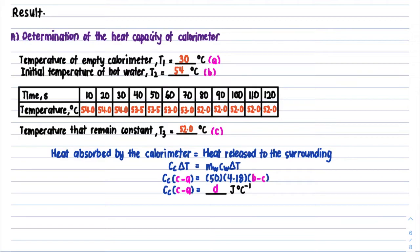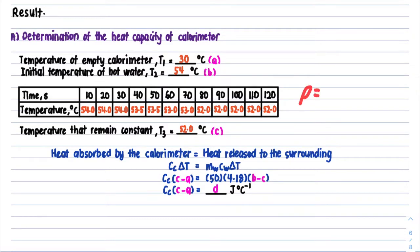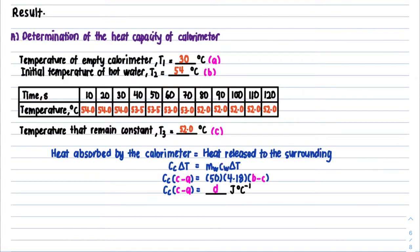Heat released to the surrounding is from the water: Q = mCwΔT. The mass of water is 50 g because we measured 50 ml of water, and since the density of water equals 1, we assume mass equals volume. Cw is 4.18. For ΔT of water: the initial temperature is 54 degrees Celsius (the hot water temperature) and the final is the temperature that remains constant, which is 52 degrees Celsius. From this we get the value of CC.